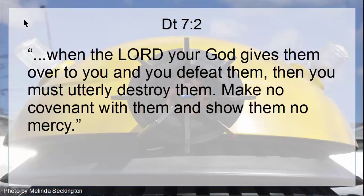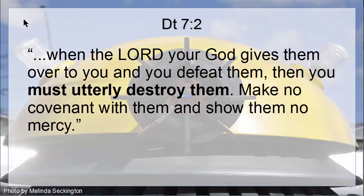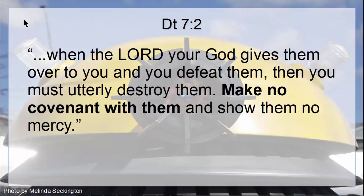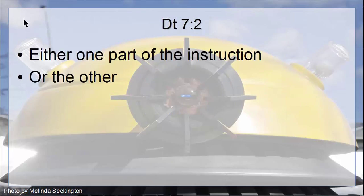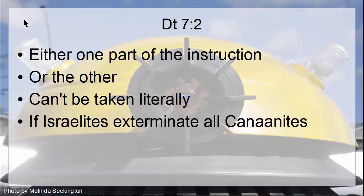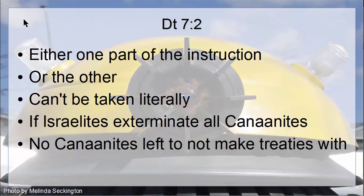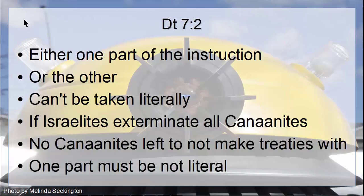In this case, if we look at Deuteronomy 7:2 and the text around the text, we don't have to look very far to spot there's a problem, because right within this verse itself we've got 'exterminate the Canaanites' and then, in the same verse, 'make sure that you do not make any treaties with them.' It's quite clear that either one part or both parts of this verse can't be taken literally, because it's just not possible to take them both literally. If the Israelites were to exterminate all the Canaanites, then they couldn't not make treaties with them, because there'd be no them to not make treaties with. So one part of this has to be not taken literally.